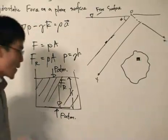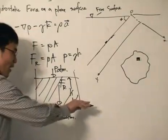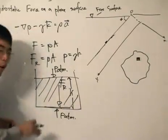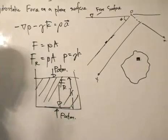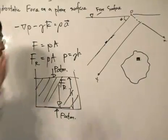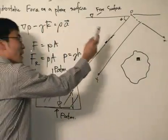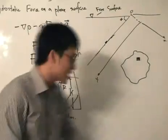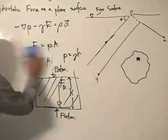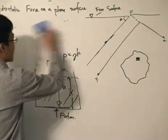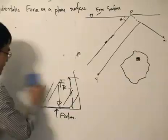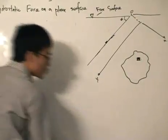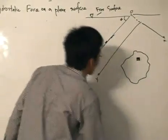Have we already solved what we're looking for? The hydrostatic force on a plane surface — well, it's given by this equation. This is for a surface that is parallel or horizontal. But if we move to an inclined surface, the calculations get more involved and more interesting. So this is for a horizontal plane surface; now let's move to an inclined surface.